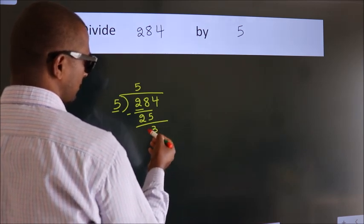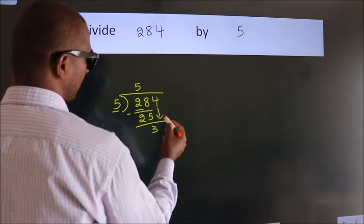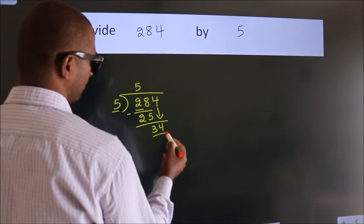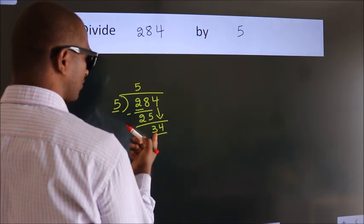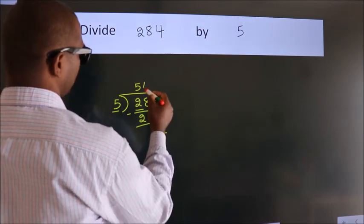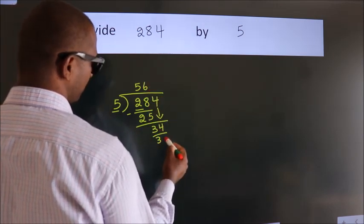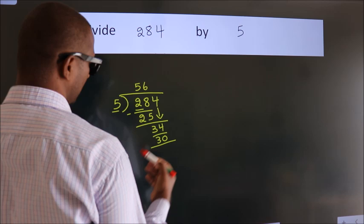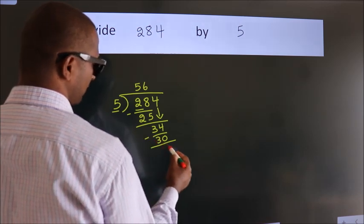After this, bring down the beside number. So 4 down, making 34. A number close to 34 in the 5 table is 5 sixes, 30. Now we subtract. We get 4.